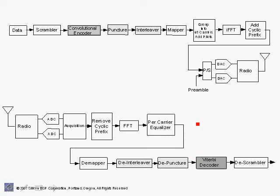What puncturing does is: since the convolutional encoder adds redundancy, in a half-rate encoder for every one bit we generate two bits at the output. So there's a lot of redundancy in the output in order to do error correction at the receiver. Puncturing takes some of these bits and tosses them away, and the depuncture replaces those bits with dummy bits. The idea is that the Viterbi decoder can correct for those bits that were tossed away even though we insert dummy bits. The Viterbi decoder is very good at correcting errors, and these are placed in certain positions that are not adjacent and may look like random errors, which the Viterbi decoder goes ahead and corrects.